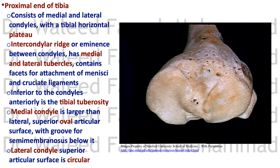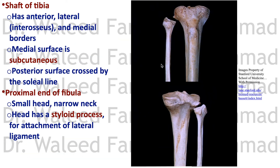On the front of the tibia, just below the tibial plateau, is the tibial tuberosity — when you kneel, you are resting on the tibial tuberosity. The shaft of the tibia has the tibial tuberosity anteriorly, a lateral interosseous border, medial border, and anterior border. The medial surface is subcutaneous and palpable under the skin. The posterior surface is crossed by the soleal line for attachment of the soleus muscle.